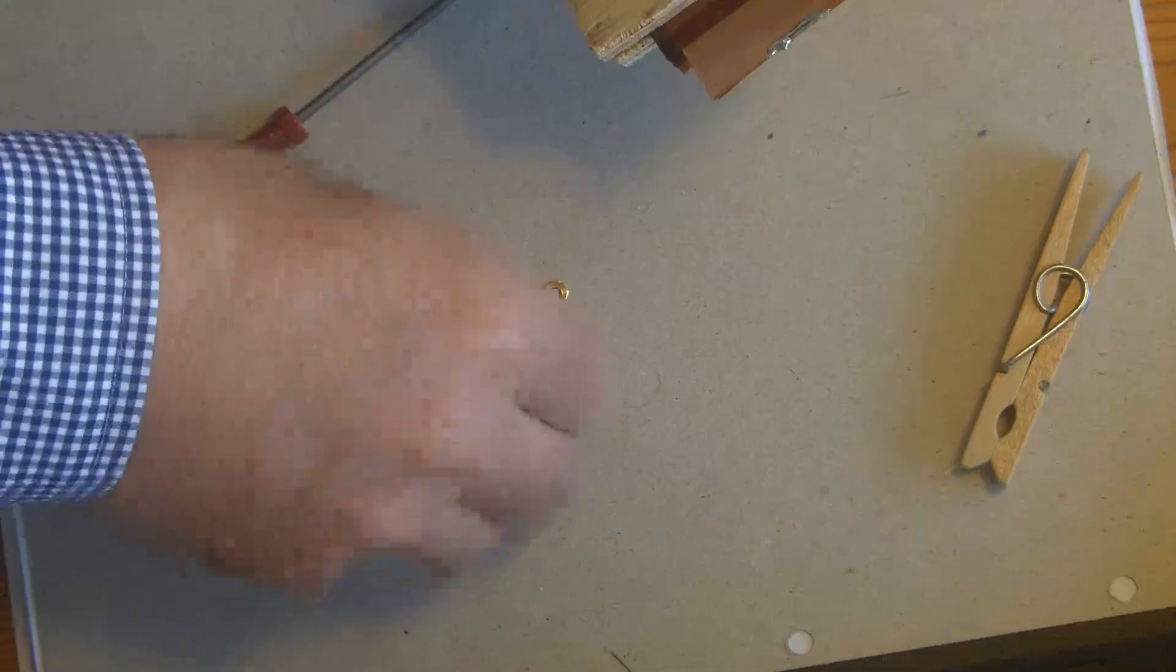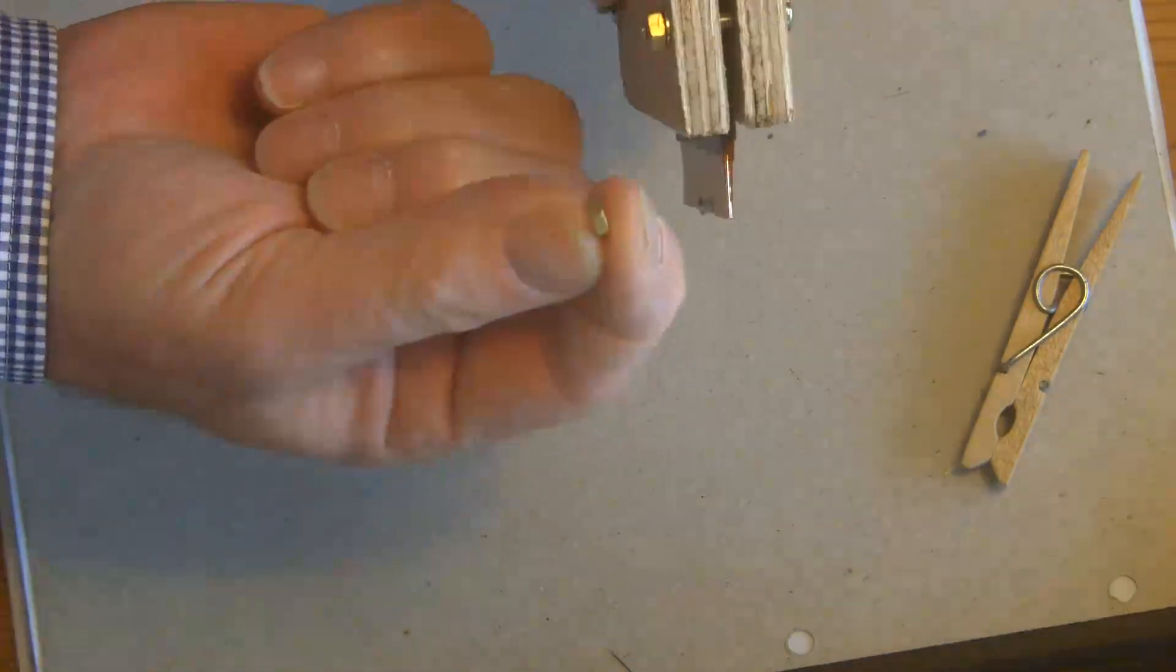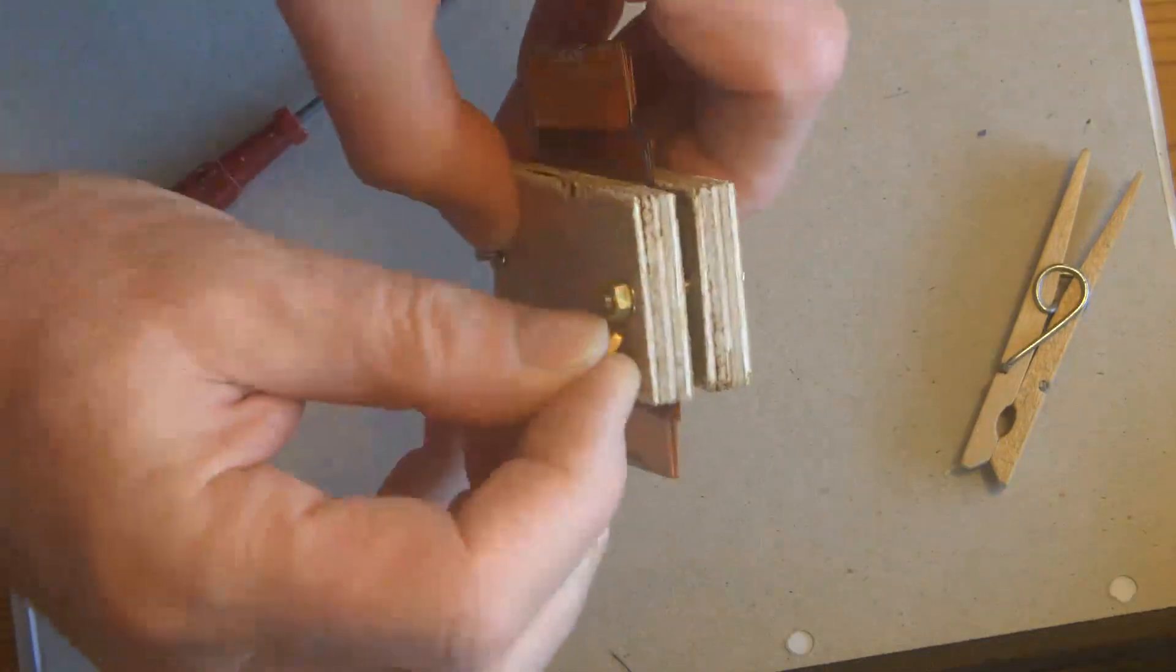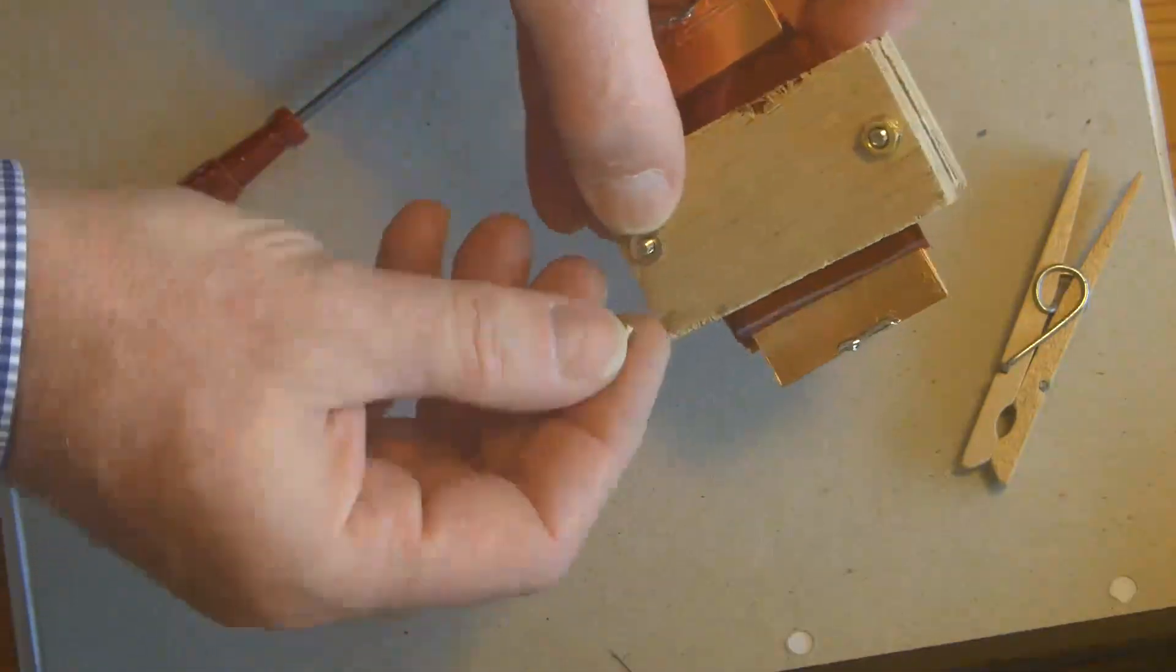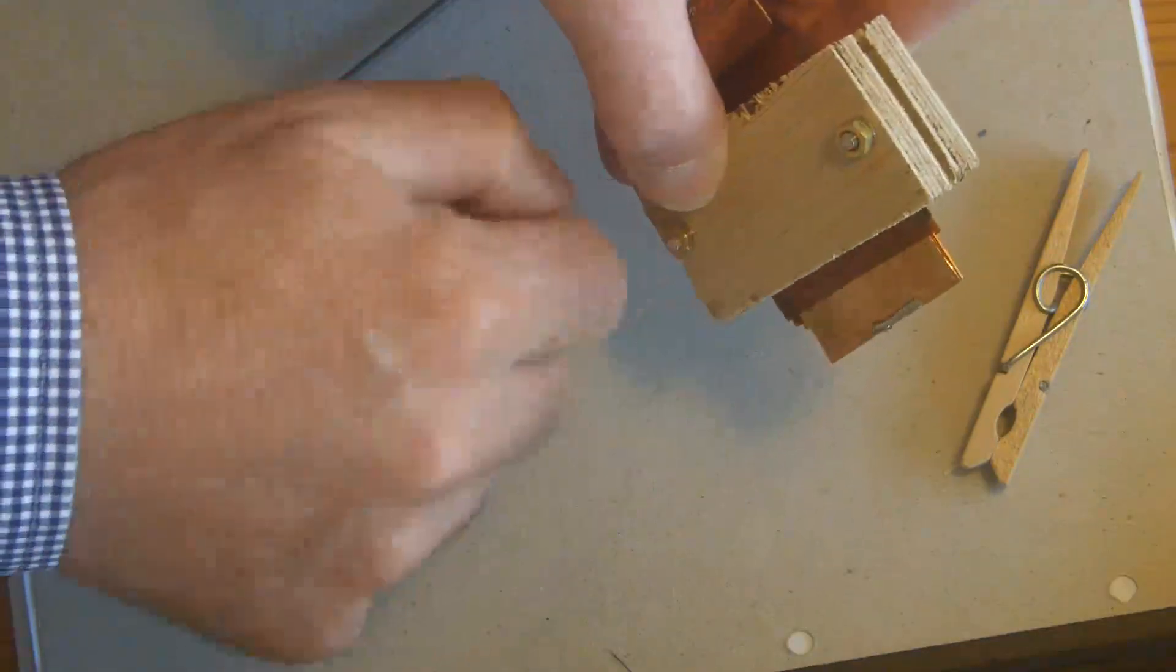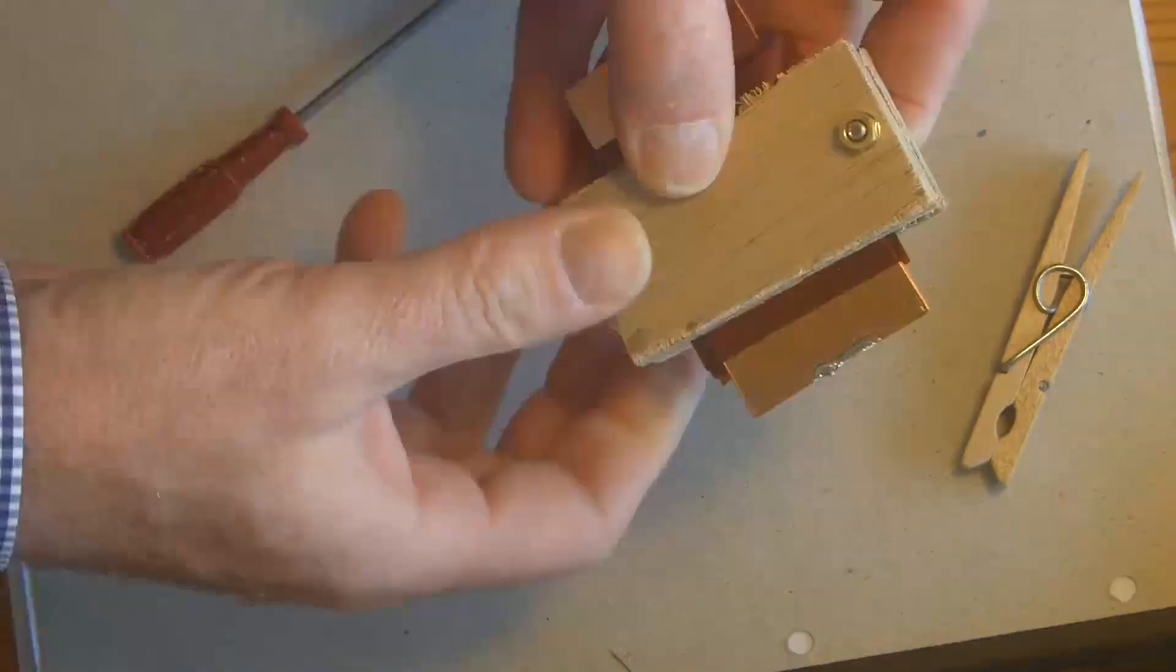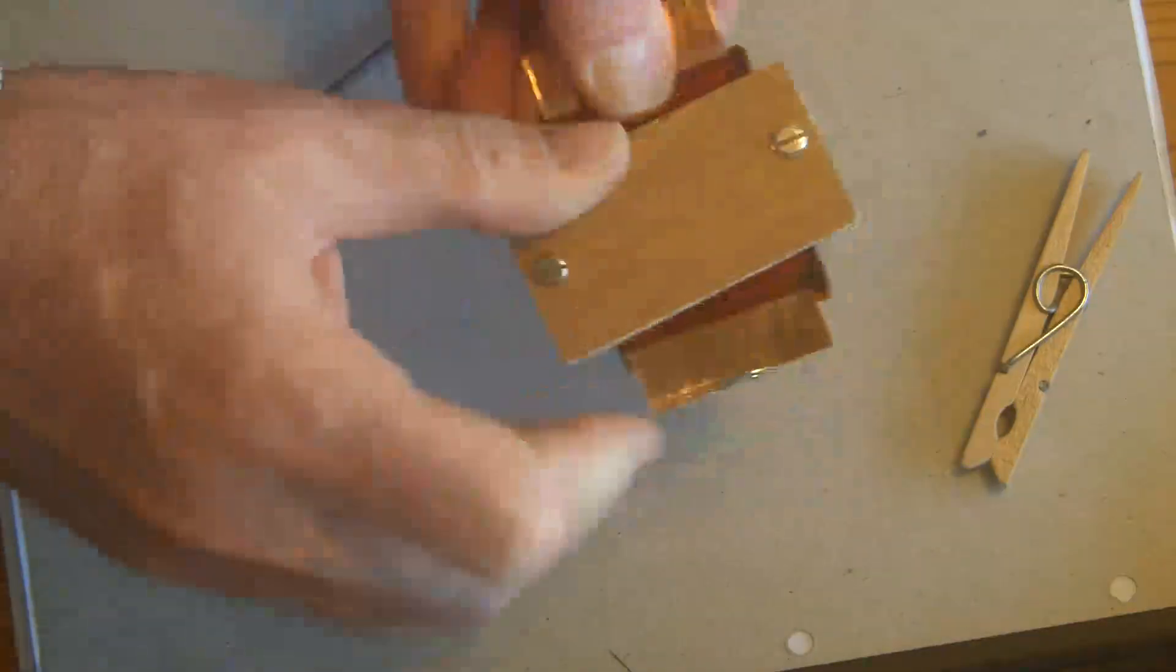If there are any apprentices out there, that's a half knot. That one's a full knot. And this one's a half knot. It's literally half the thickness. So if they send you to the stores to get some half knots, that's okay. But if they send you for a long wait, then they're pulling your leg.